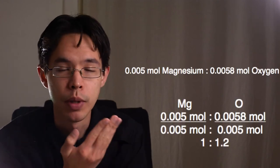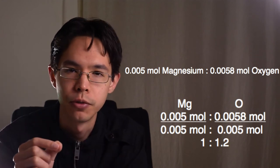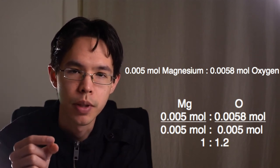we get this, which when simplified becomes 1 to 1. Now this confirms the theoretical empirical formula for magnesium oxide, which should be MgO.